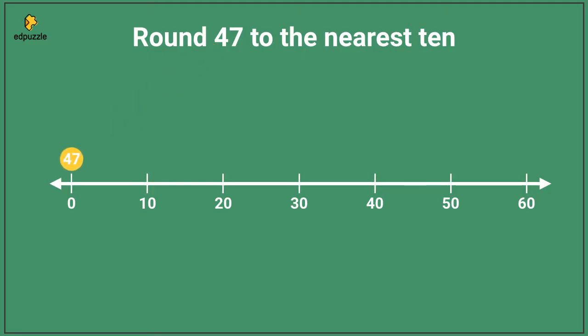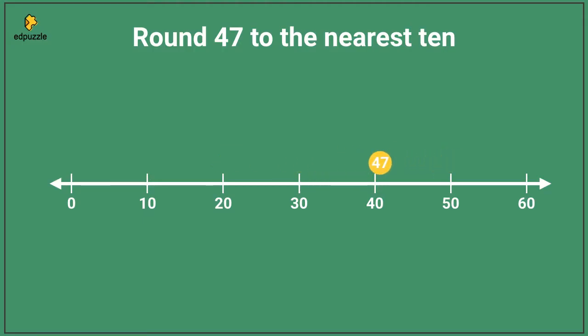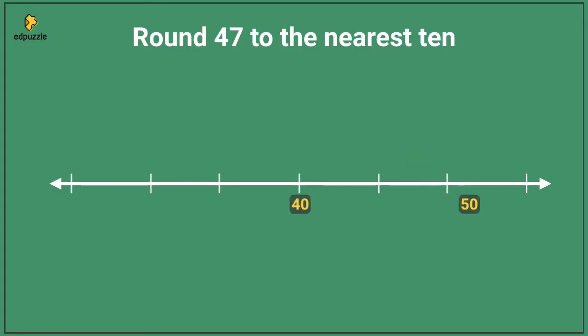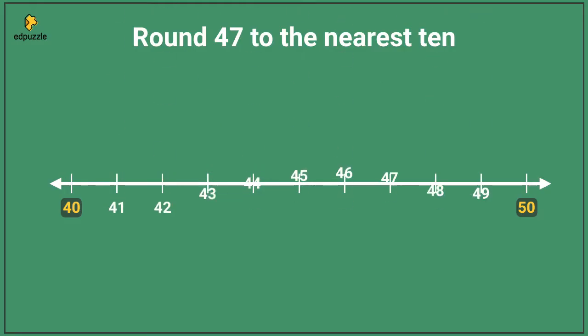Forty-seven — it's more than ten, more than twenty, more than thirty, more than forty, but it's less than fifty. It's somewhere in between forty and fifty. So let's zoom in on this number line so that we're only looking at the numbers between forty and fifty.